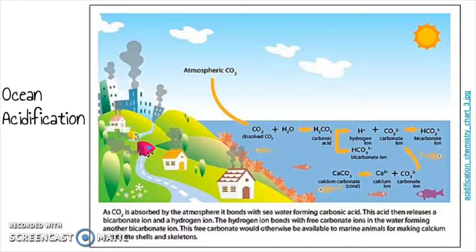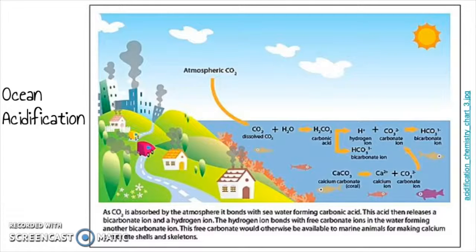As CO2 is absorbed from the atmosphere, it bonds with seawater, forming carbonic acid. This acid then releases a bicarbonate ion and a hydrogen ion. The hydrogen ion bonds with free carbonate ions in the water, forming another bicarbonate ion. This free carbonate would otherwise be available to marine animals for making calcium carbonate shells and skeletons, as seen here in the diagram.